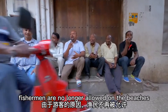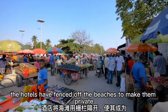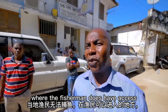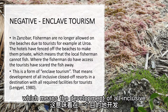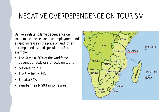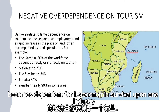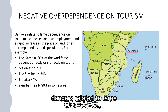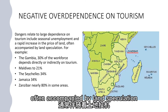In Zanzibar, fishermen are no longer allowed on the beaches due to tourists — for example, at Uraa. The hotels have fenced off the beaches to make them private, which means that local fishermen cannot fish. Where fishermen do have access, the tourists have scared the fish away. This is a form of enclave tourism, which means the development of all-inclusive, closed-off resorts in a destination where all required facilities are exclusively for tourists. Diversification in an economy is a sign of health; however, if a country or region becomes dependent for its economic survival upon one industry, it can put major stress on the country and people. Dangers include seasonal unemployment and a rapid increase in the price of land, often accompanied by land speculation.